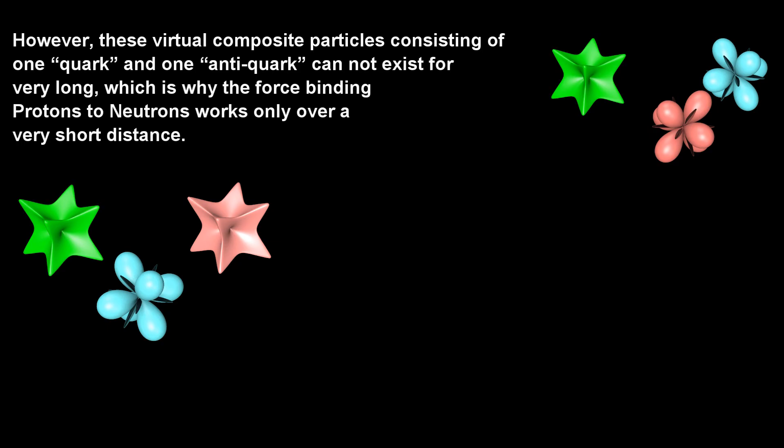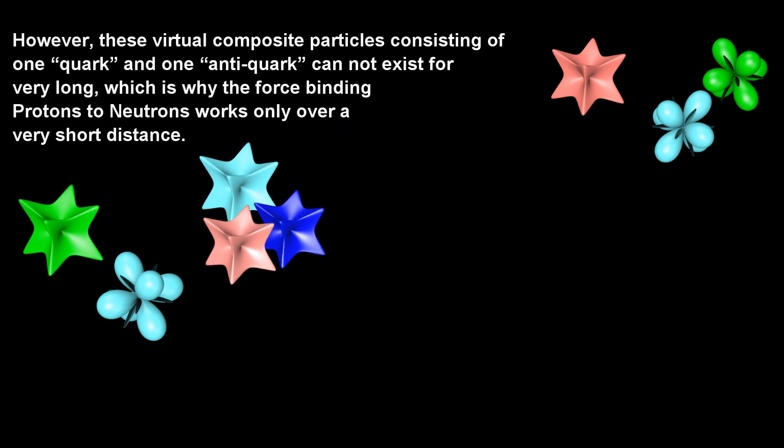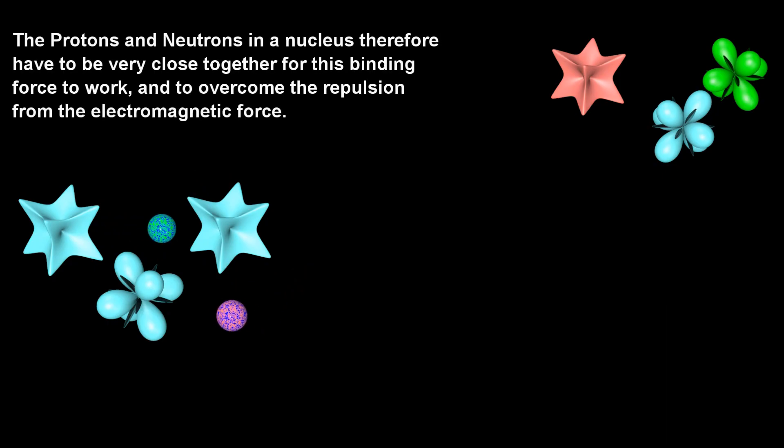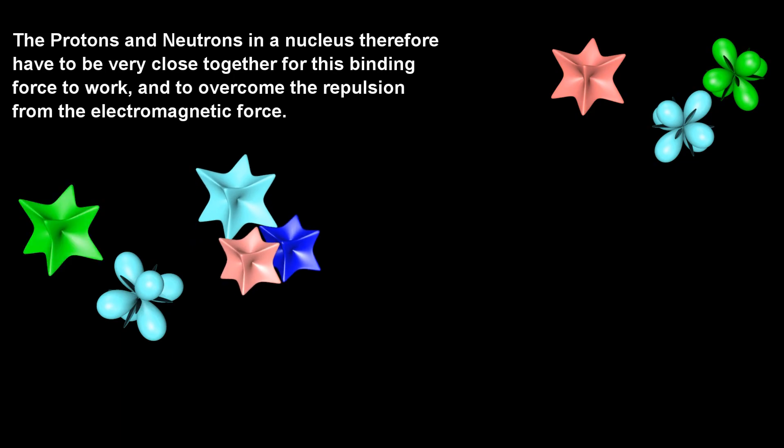However, these virtual composite particles consisting of one quark and one anti-quark cannot exist for very long, which is why the force binding protons to neutrons works only over a very short distance. The protons and neutrons in a nucleus therefore have to be very close together for this binding force to work, and to overcome the repulsion from the electromagnetic force.